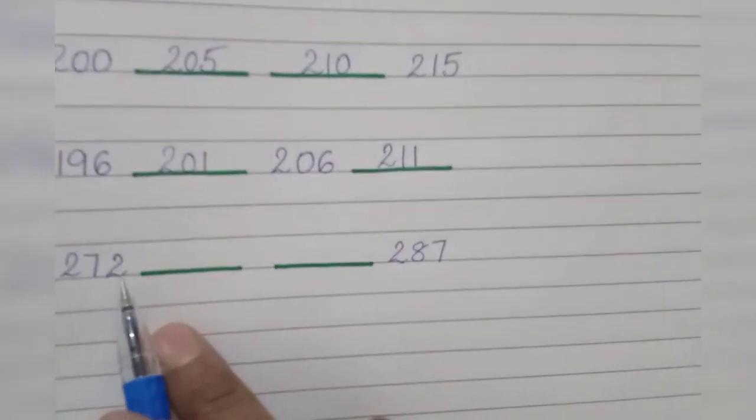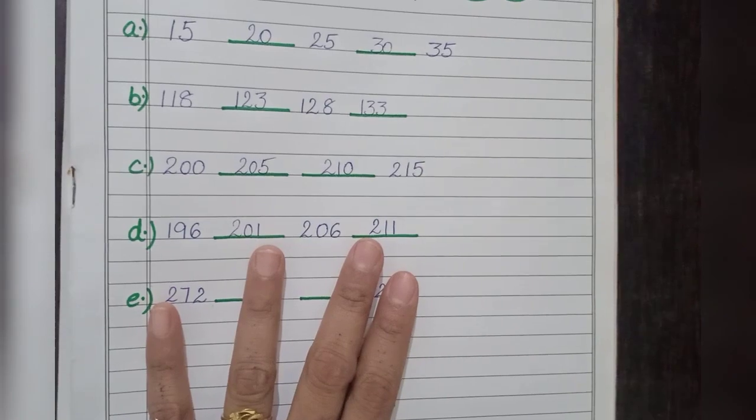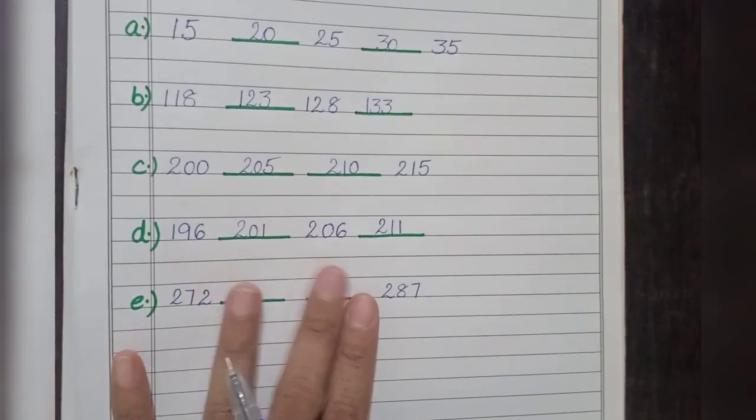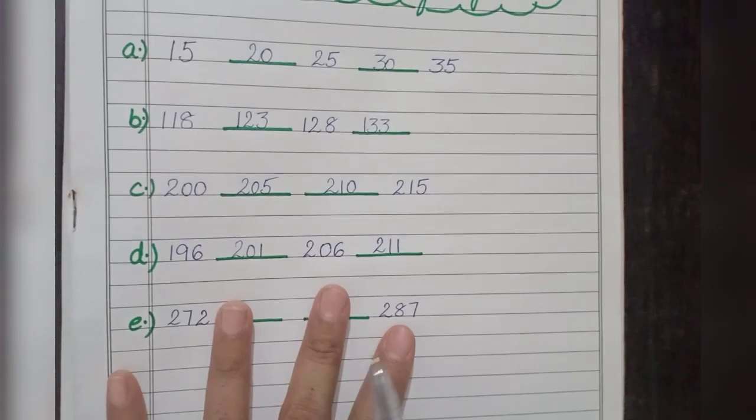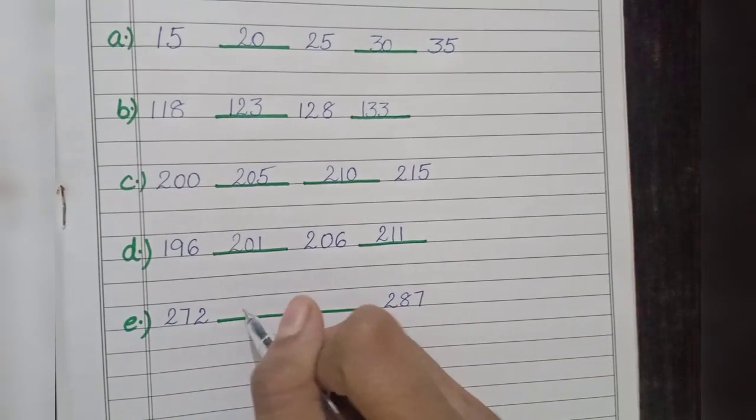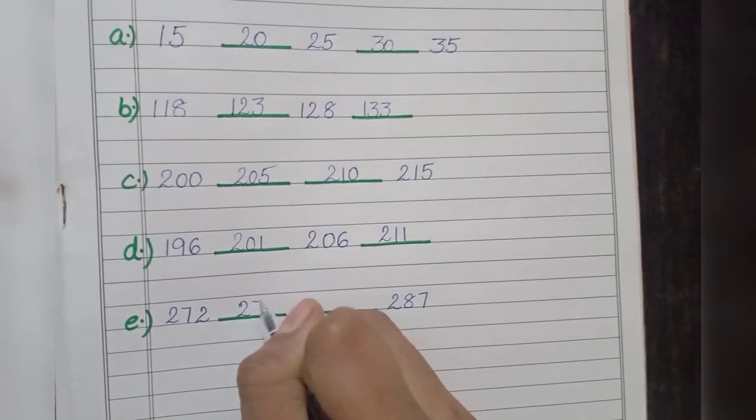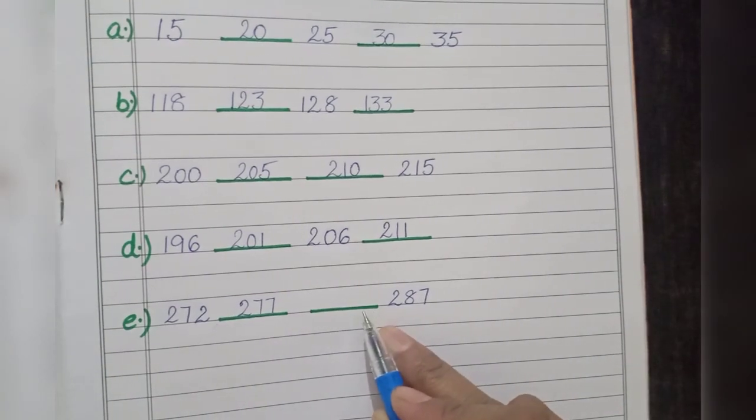It's 272. Now we will add 5 fingers: 273, 274, 275, 276, 277. So I will get the answer 277. Now let me add 5 more to this.